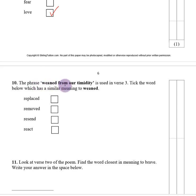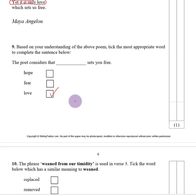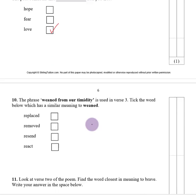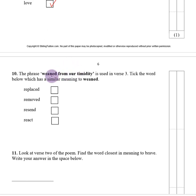Number ten. The phrase 'weaned from our timidity' is used in verse three. Tick the word which has a similar meaning to 'weaned': replaced, removed, resend, or react. Looking at verse three — 'we are weaned from our timidity' — we can try replacing each word. Removed from our timidity fits best. So 'weaned' means to be removed from something.